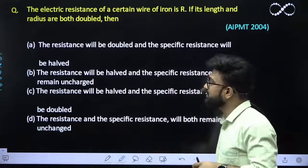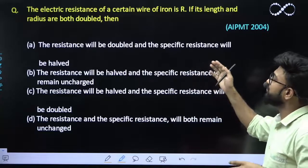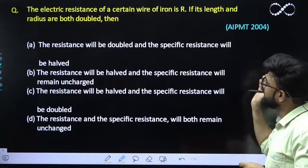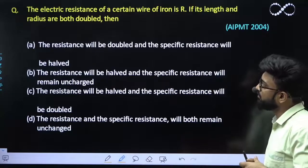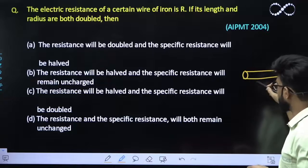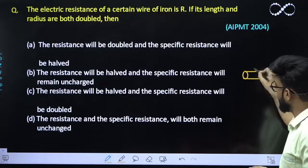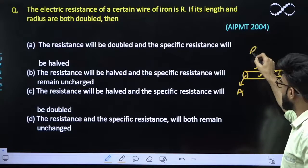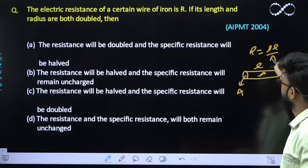Question says the electric resistance of a certain wire of resistance R if its length and radius are both doubled. You have been given a certain wire whose length is L, its area be A and resistivity be Rho. So this R must be equal to Rho L by A.